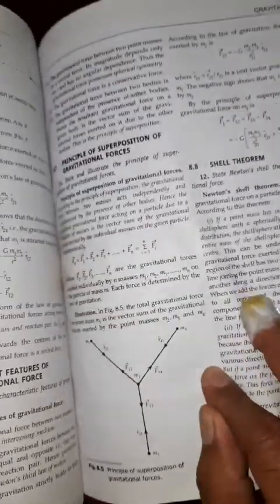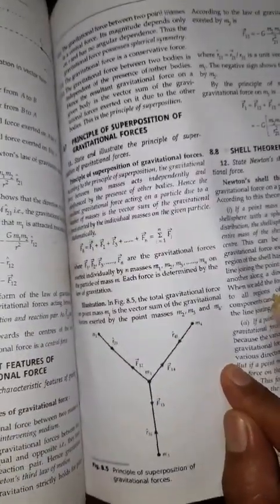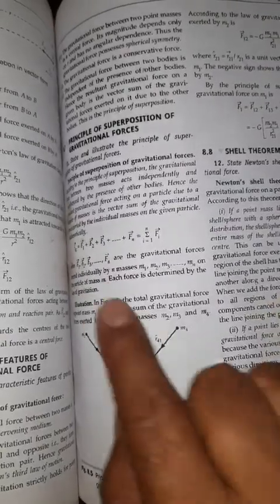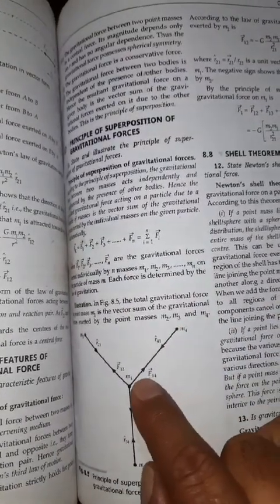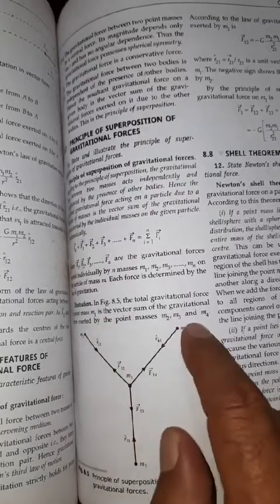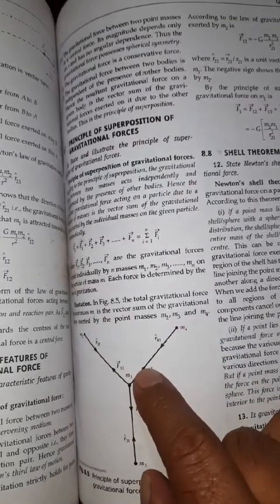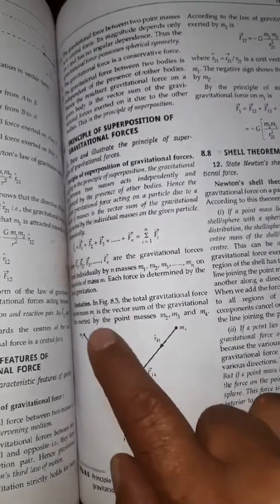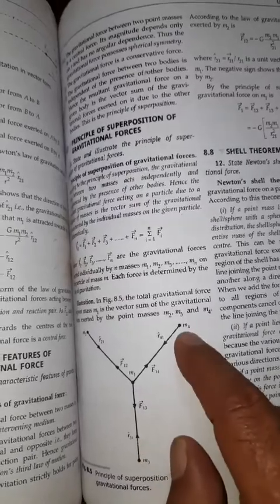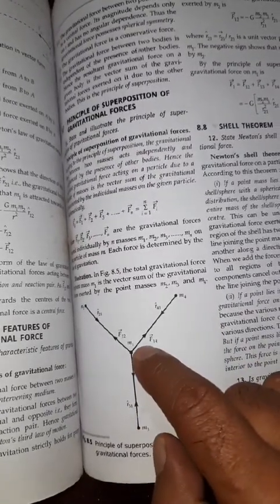So next is principle of superposition of gravitational force. What does the superposition principle say? Suppose there are three, four masses. One, two, three, four masses. So that is mass 2, mass 3, and mass 4 applying force on mass M1.